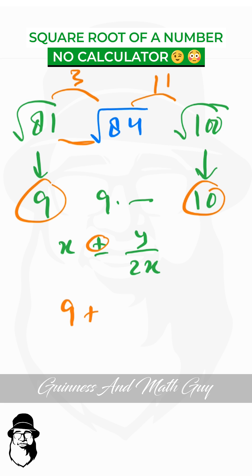So 9 plus y is this distance 3, 3 over 2 times x. We multiply 2 by 9 to get 18. So 9 plus 3 over 18 is 1 over 6 or 0.16. So 9 plus 0.16 is 9.16 and it is accurate to two decimal places.